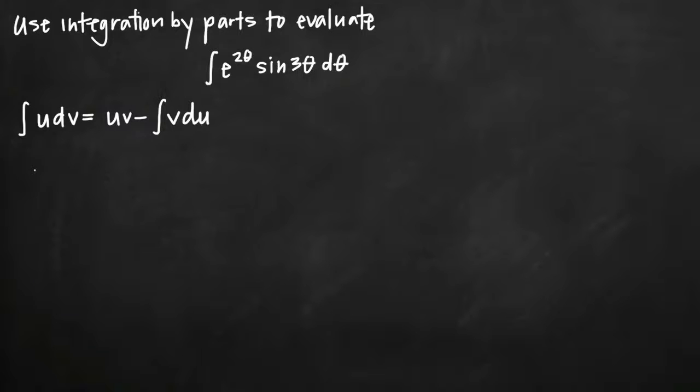Use integration by parts to evaluate this integral. Identify u and dv, then take the derivative of u to get du, and the integral of dv to get v.